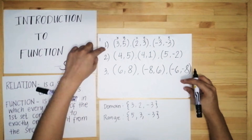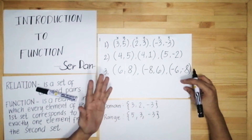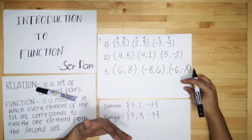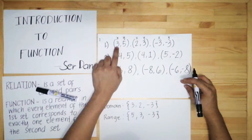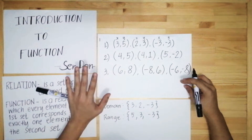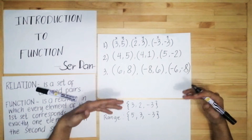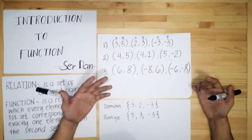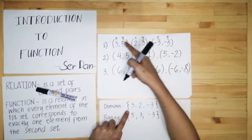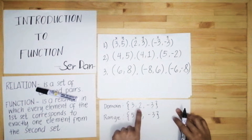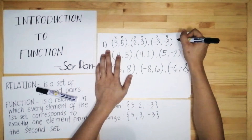These are all relations because they are sets of ordered pairs. Now let's identify whether number one is a function or not. To identify whether a set of ordered pairs is a function, look only at the x values. We have 3, 2, and −3. If there are no identical x values, it is a function. If there are identical or repeated x values, it is not a function. Since 3, 2, and −3 are all different, the first example is a function.